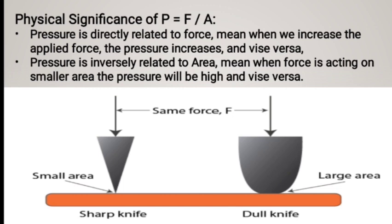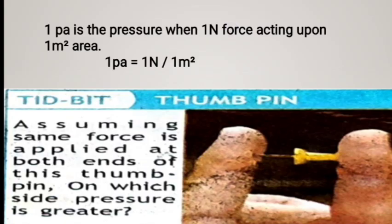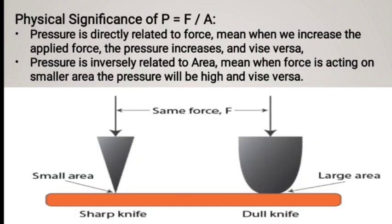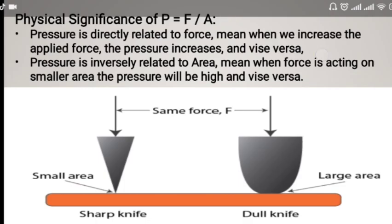What is the force per unit area? The physical significance is that pressure is directly related to force, and area is inversely related to pressure. When we increase the applied force, the pressure increases, and vice versa. Area has an inverse relation with pressure.